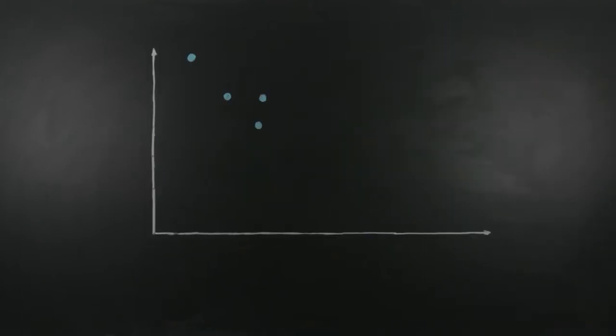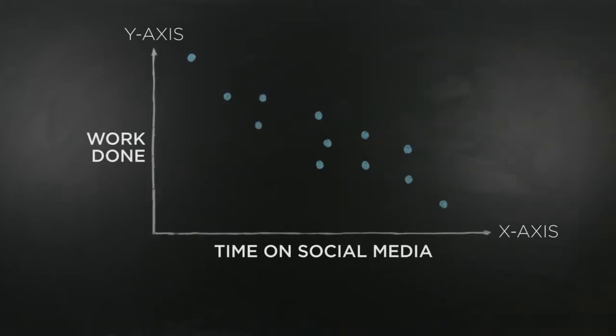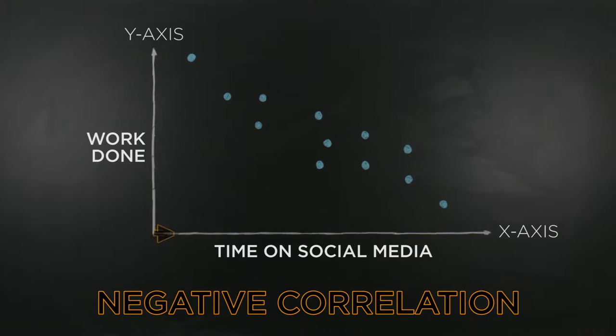If your graph looks like this, then you have a negative correlation. As x increases, y decreases, and the regression line looks like this. From this graph, we might predict that if someone spent several hours on social media, they would get no work done. Unless they work in public relations, of course.